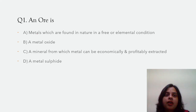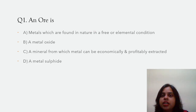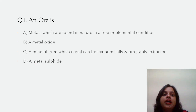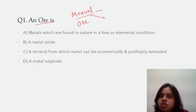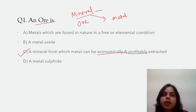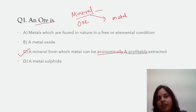This is our first chapter, that is Metallurgy. The first question is: an ore is a metal which is found in nature in a free or combined condition; a metal oxide; a mineral from which metal can be economically and profitably extracted; or a metal sulfide. So we have two things — mineral and ore. Everything found inside the earth's crust is called a mineral, and the mineral from which metal can be extracted economically and profitably is called an ore. So the correct answer is: an ore is a mineral from which metal can be economically and profitably extracted.